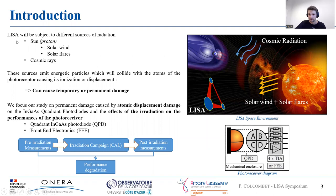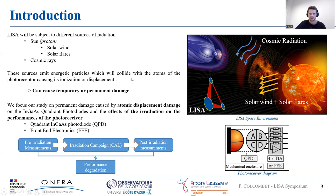So during its mission, LISA will be subject to different sources of radiation. They are mainly coming from the sun with solar wind and solar flares. These sources emit energetic particles like protons, which will collide and interact with the atoms of the photoreceiver, causing either ionization or displacement of the atom, and therefore will change the optical and electrical properties, causing temporary or permanent damage or degradation in performance. So our goal here is to evaluate and quantify this degradation.